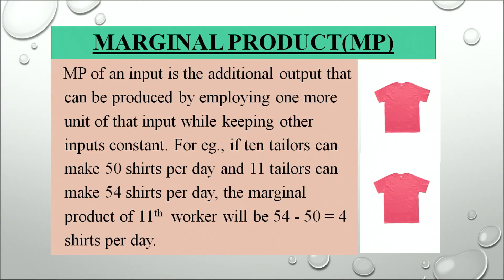The third concept is marginal product (MP). Marginal product of an input is the additional output that can be produced by employing one more unit of that input while keeping other inputs constant. For example, if 10 tailors can make 50 shirts per day and 11 tailors can make 54 shirts per day, the MP of the 11th tailor is 54 minus 50 equals 4 shirts per day. Marginal product shows the change or addition made by the last unit of worker to the total product.